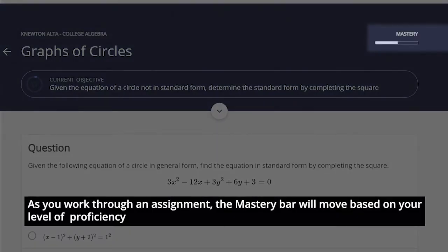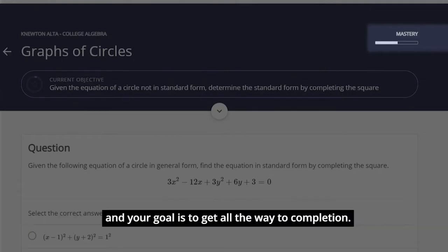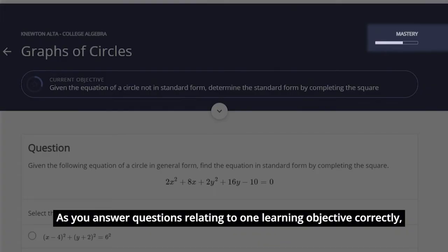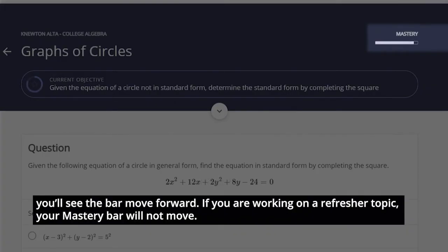As you work through an assignment, the mastery bar will move based on your level of proficiency, and your goal is to get it all the way to completion. As you answer questions relating to one learning objective correctly, you'll see the bar move forward.